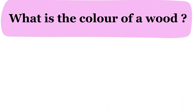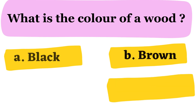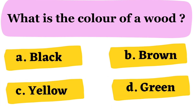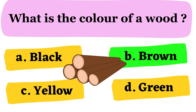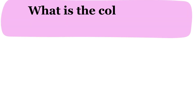What is the color of wood? A. Black B. Brown C. Yellow D. Green. The correct answer is option B. Brown.